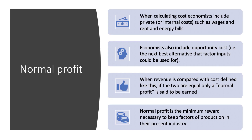It's important to distinguish between normal and abnormal profit. Basically, when a firm makes normal profit, we say the economic profit is zero. Why is that the case? Well, when calculating cost, economists include the classic cost: interest on loans, wages, raw materials, rent, energy bills — they include those internal costs.